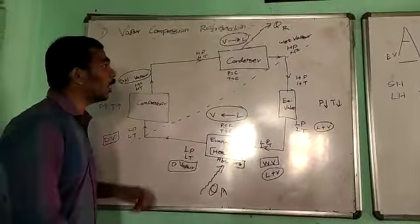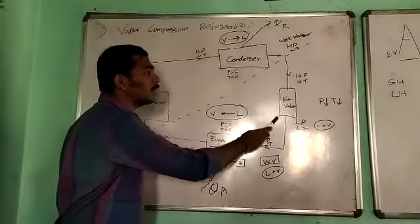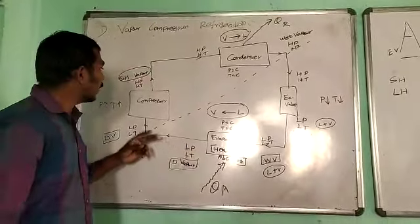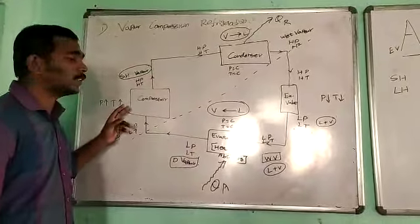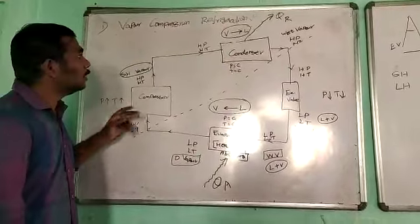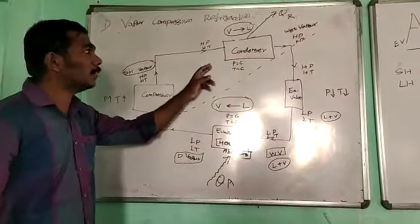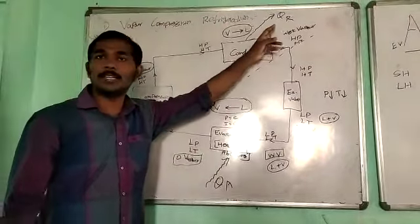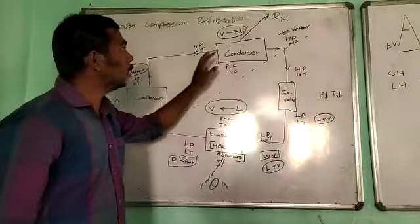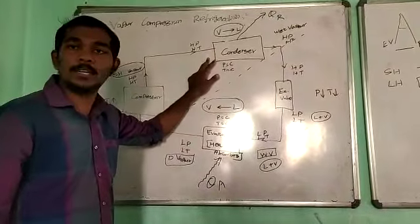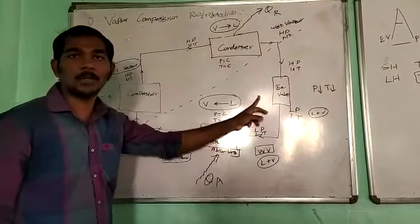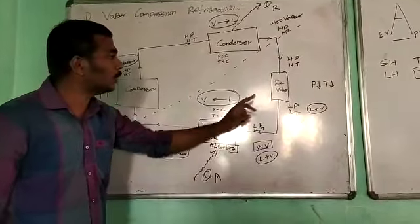Compressor, Expansion Valve, Evaporator. Compressor and temperature increase. Compressor is a heat-rejecting device. This is a heat-rejecting device. Expansion Valve, Compressor and temperature increase.